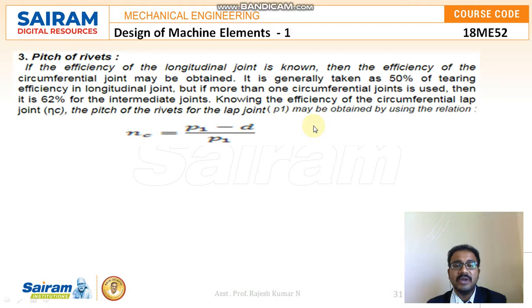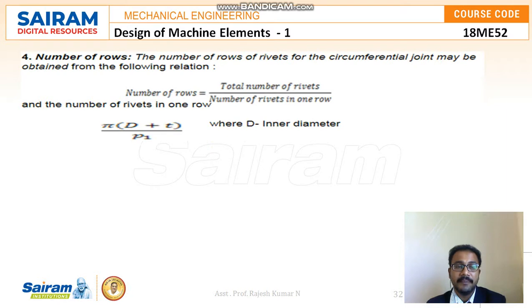Next is the pitch of the rivets. When discussing failure, this was an important factor. For the longitudinal joint the tearing efficiency is 50%, but for the circumferential joint the intermediate joint efficiency recommended is 62%. The pitch of the rivets for the lap joint may be obtained by the relation (P1 - D) / P1. The number of rows may be obtained as total number of rivets divided by the number of rivets in one row. The inner row diameter is found using π × (D + D) / P1.